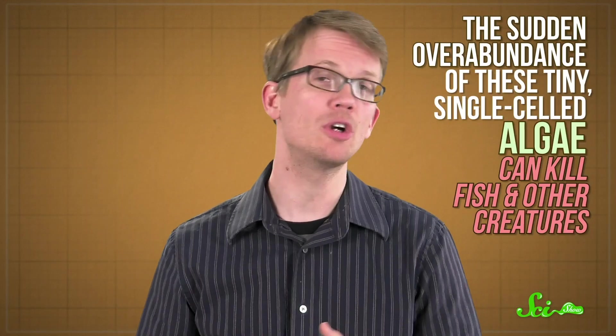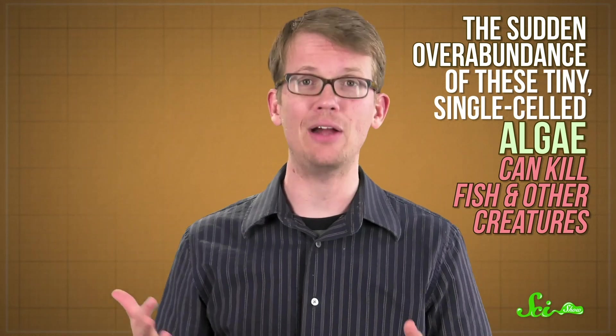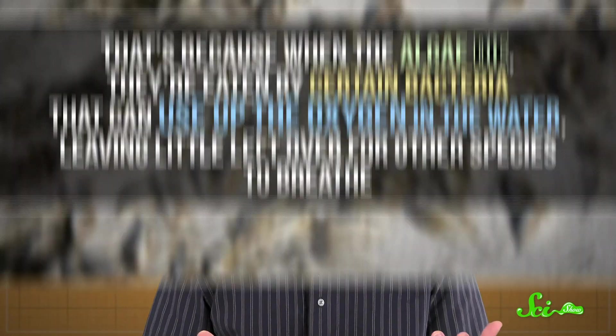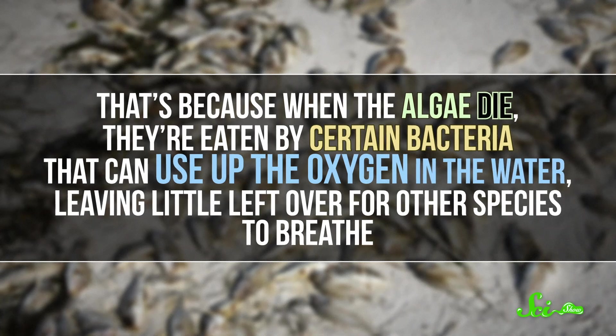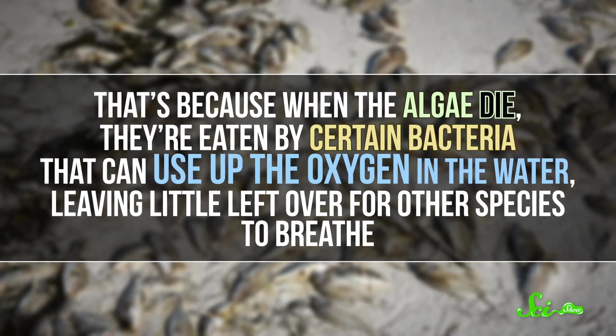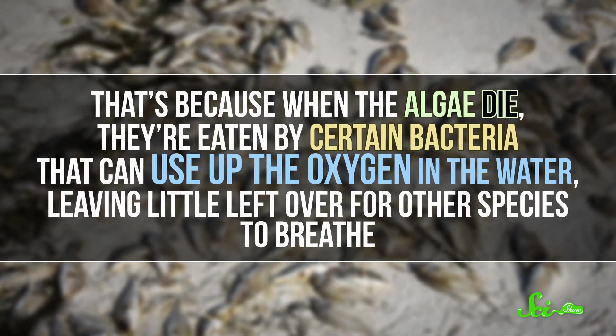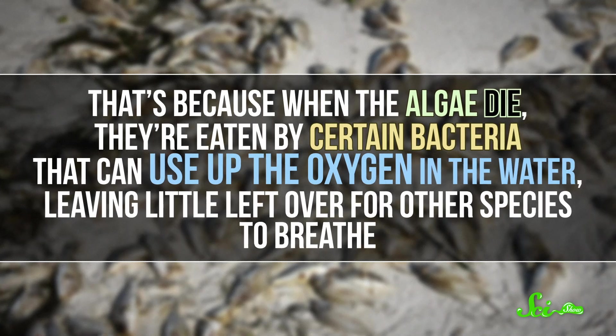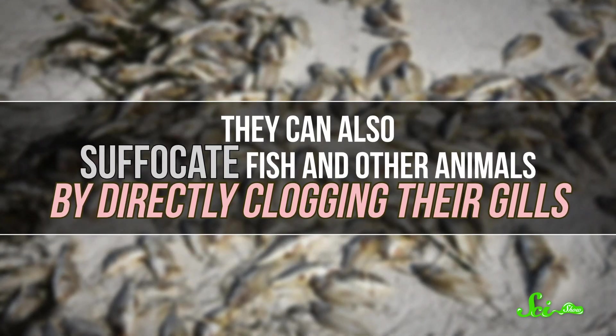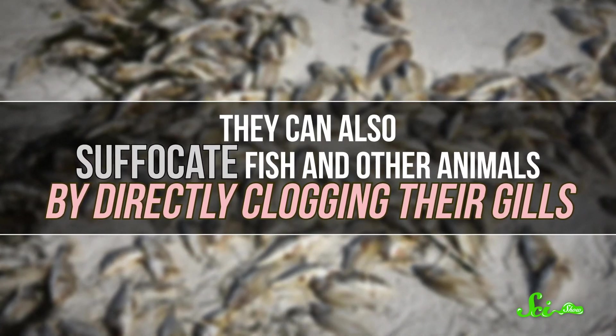Like other blooms, the sudden overabundance of these tiny single-celled algae can kill fish and other creatures. When the algae die, they're eaten by certain bacteria that can use up the oxygen in the water, leaving little left over for other species to breathe. They can also suffocate fish and other animals by directly clogging their gills.